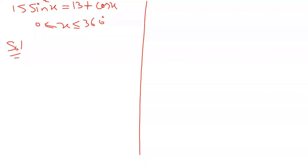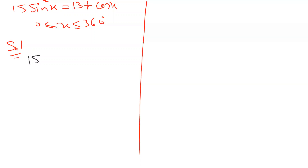Next question: 15 sine squared x equals 13 plus cosine x. We have to solve for angle x. Can I start directly? No — here we have cosine and sine, and they don't match. We need one trigonometric ratio, one trigonometric function in a question.